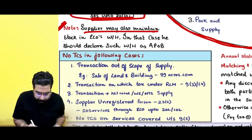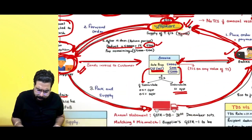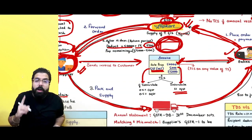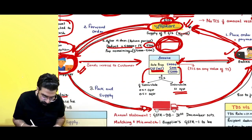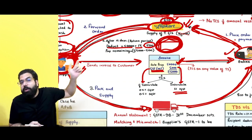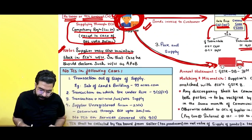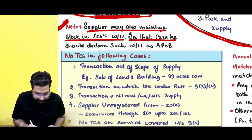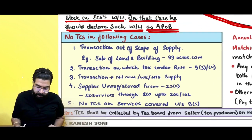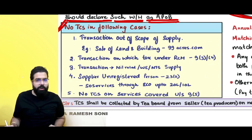A supplier may also maintain stock in an e-commerce warehouse. For example, Flipkart or Amazon have godowns where you can keep your stock. But if you keep your stock in their godown, you have to declare their place as your additional place of business — you should declare such warehouse as an additional place of business.